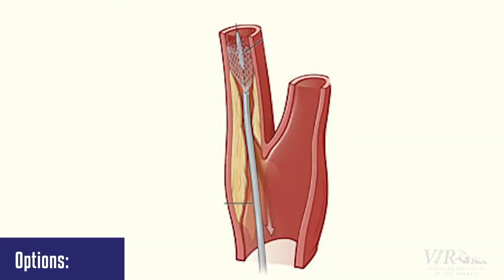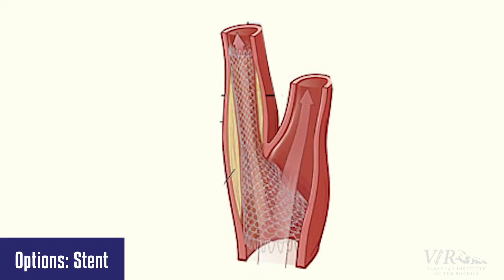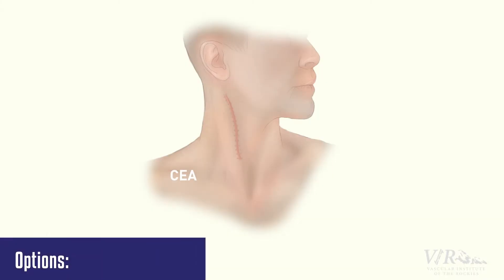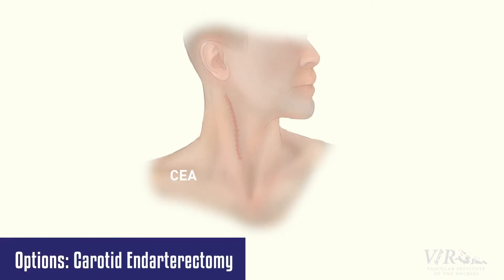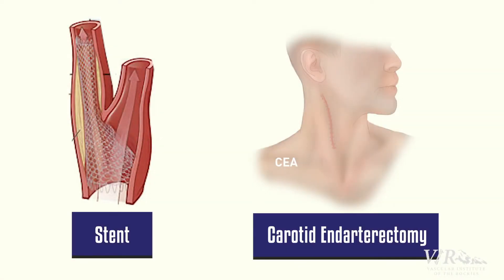Historically, we had two options. We could either put a stent in to hold the vessel open — those stents were placed through the groin and traveled all the way up into the neck — or we could do a carotid endarterectomy, which is an open procedure where we make an incision on the neck, go down, clean out the artery, and put a patch on it. Both of those procedures carry a risk of stroke, even though they're done to prevent stroke.